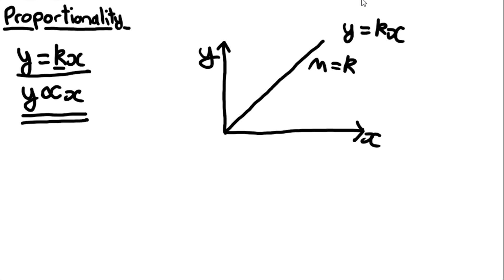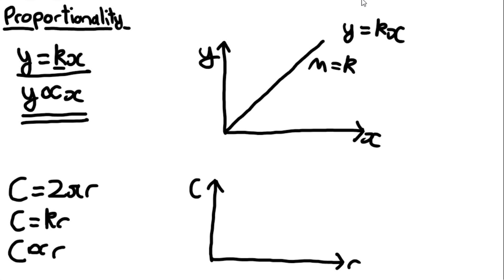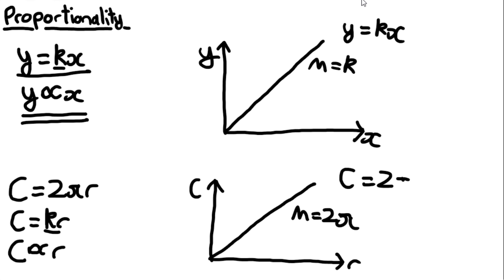Here's an example from the spec. The circumference of a circle is C = 2πr. Since 2π is a constant, C = kr where k is a constant. So we can say circumference is proportional to r. Graphically, plotting C against r gives a straight line showing that as r increases, C increases linearly, with gradient equal to 2π, which equals k. The equation of this line is C = 2πr.